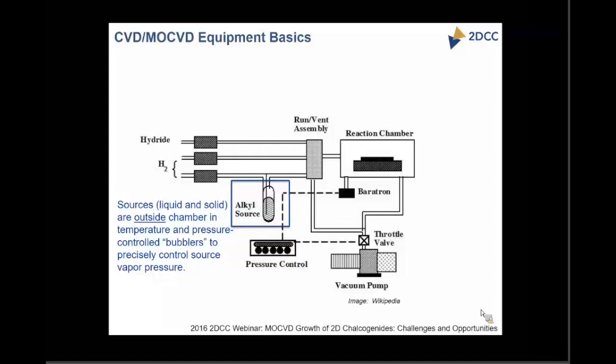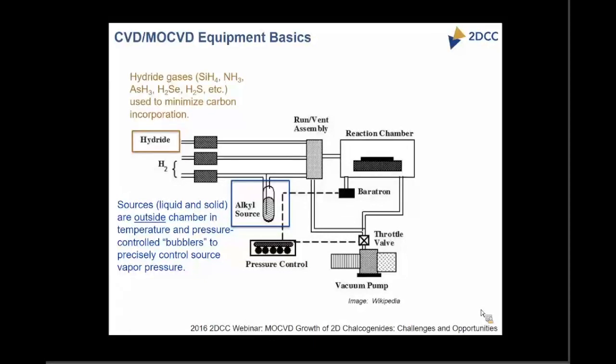In addition to the metal source, which is typically a solid in our cases, we also have a hydride source for the chalcogen. It can be a variety of gases, but for what we are focused on, it is hydrogen selenide and hydrogen sulfide. Using these hydride sources has the advantage of minimizing carbon contamination in the films, which can happen with metal organics. When we talk about MOCVD, that's a subdivision of CVD based on the precursor — if it's a metal organic precursor, you call it MOCVD.